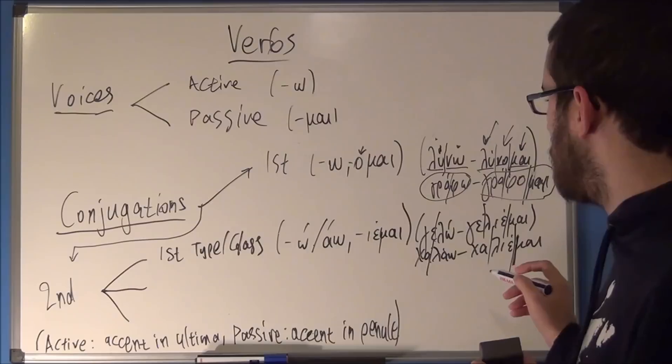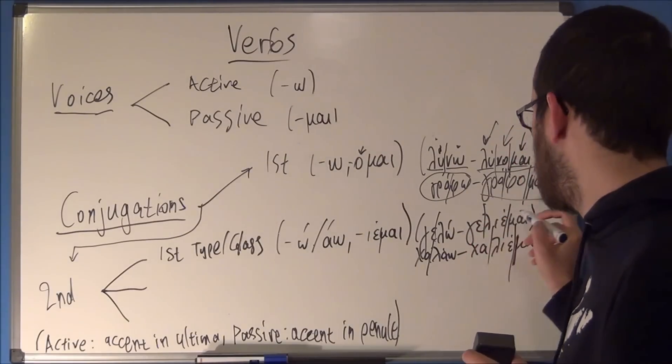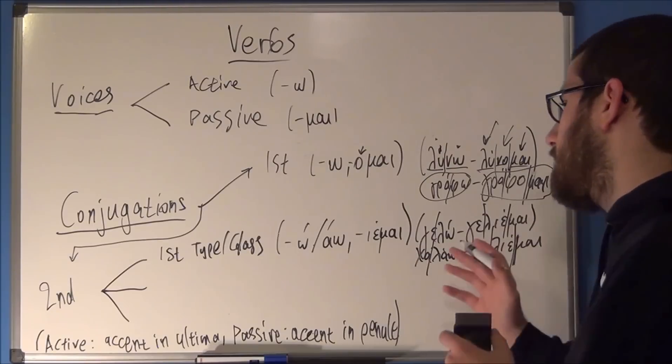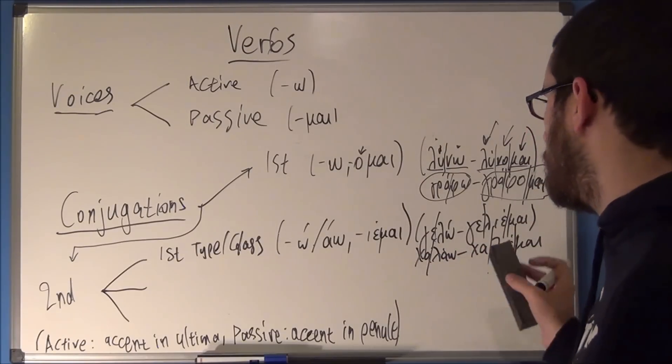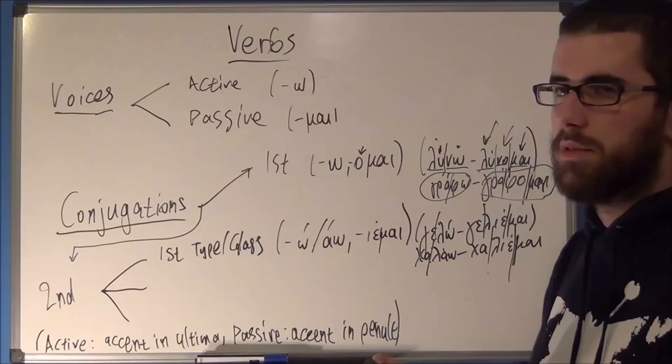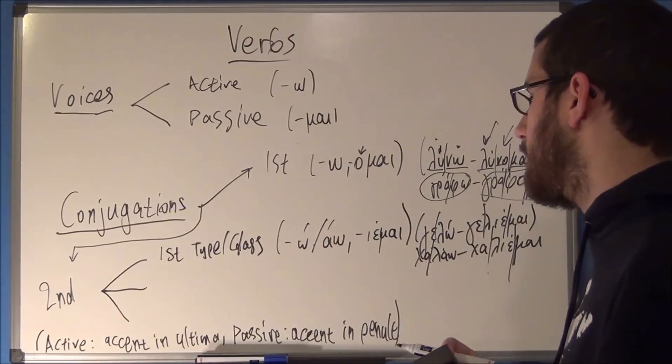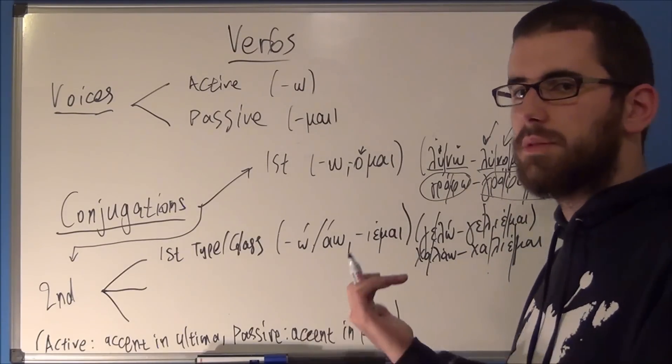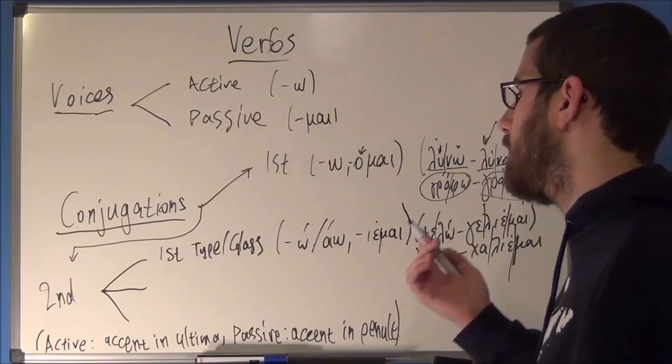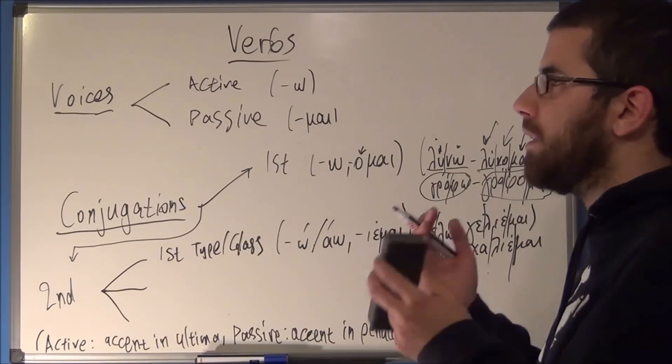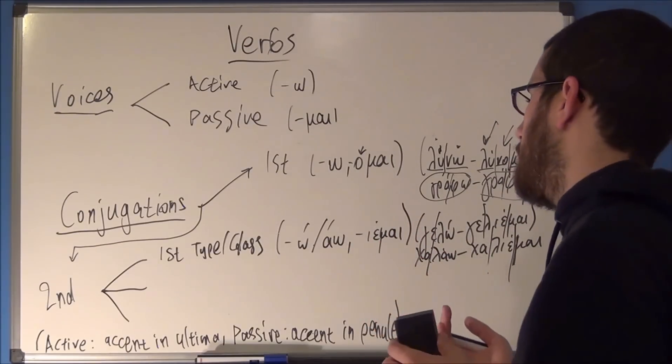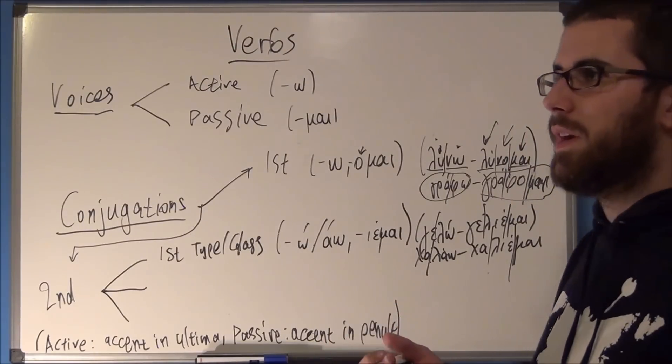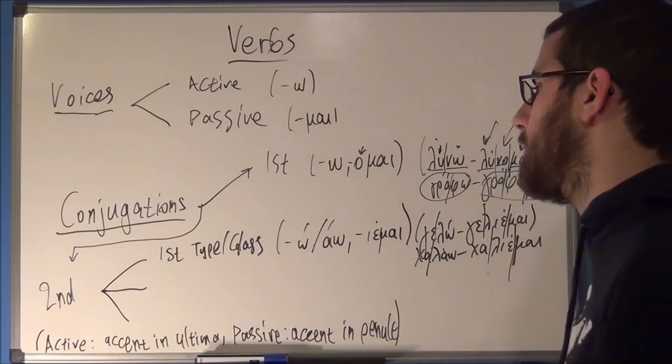If you count these syllables, like here you have the accent in the ultima, and here, in the passive voice form, you have the accent in the penult. Same goes for chalao. Generally, in all second conjugation verbs, this is what applies. It's like you go one accent towards the ultima compared to the first conjugation. In the first conjugation, you have the accent in the penult for the active voice, and the accent in the antepenult for the passive voice. Like three syllables from the end for passive, two syllables from the end for active.